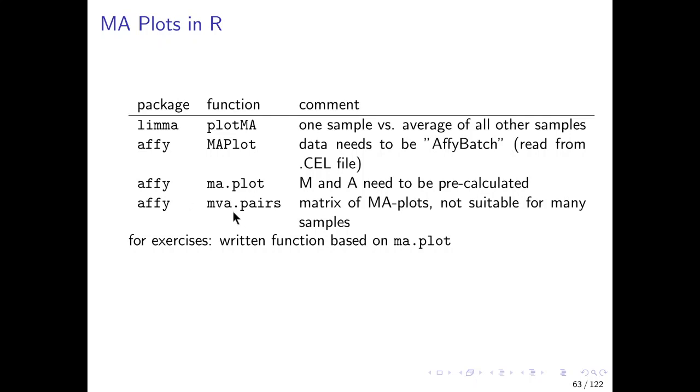And there is also the mva.pairs function which takes a whole dataset or matrix and creates a scatter plot matrix of all the MA plots. But this is not really suitable if you have many samples because then it gets so small that you cannot see anything. So for the exercises that will come about this topic, we have decided that we will give you a function that we wrote by ourselves, which is basically based on the ma.plot function. That means that we will take a dataset, pre-calculate this M and A values, and then use the MA plot function to do the plotting of the MA plot.